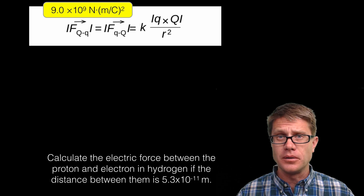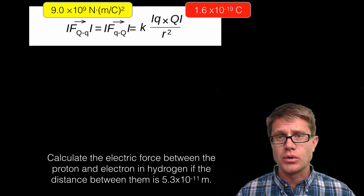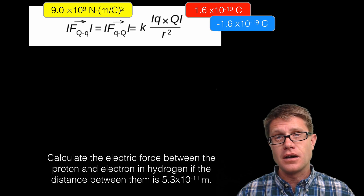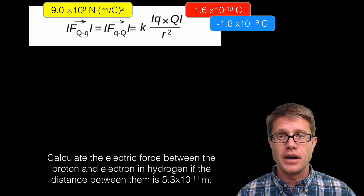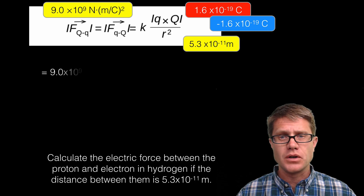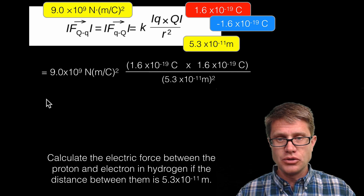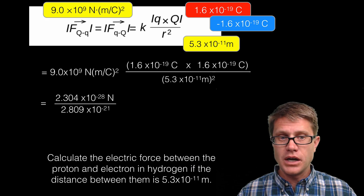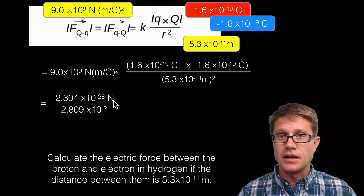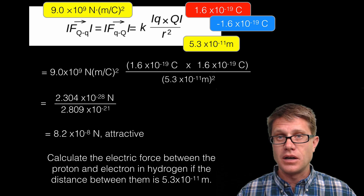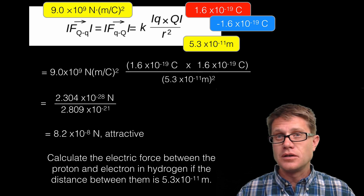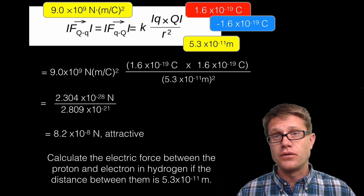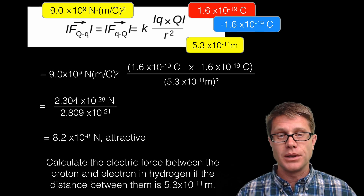Since I have a proton and an electron their charge is not given in the problem — remember that is the elementary charge. The proton has the elementary charge and the electron will be a negative value. The distance is given in the problem. Setting it up: the two charges are on top, and since we use the absolute value the negative sign goes away. I square the distance on the bottom, units cancel, and I get 8.2 times 10 to the negative 8th newtons. Since the charges are opposite it is an attractive force — that is what is actually holding the electron in place.